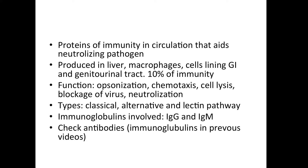The complement system has three pathways: classical, alternative, and lectin. Only in the classical pathway will we find immunoglobulins, which are your antibodies. For more information about antibodies, you can check the video about antibodies.